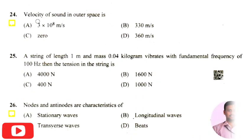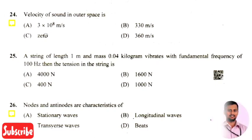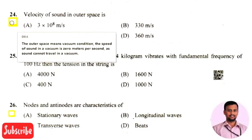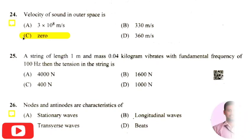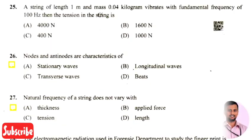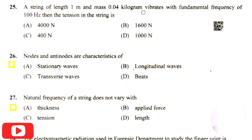The next question is: the velocity of sound in outer space is — the right answer is option three, that is zero. Outer space means vacuum conditions. The speed of sound in vacuum is zero metres per second, so sound cannot travel in vacuum or in outer space. Therefore the velocity of sound in outer space is zero.